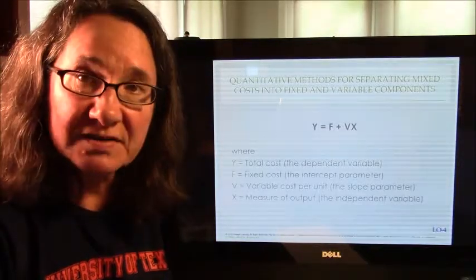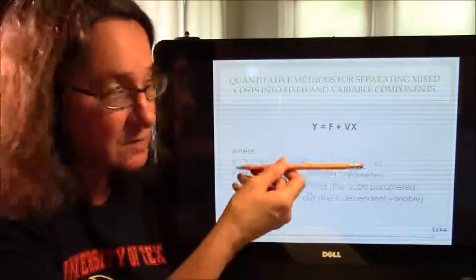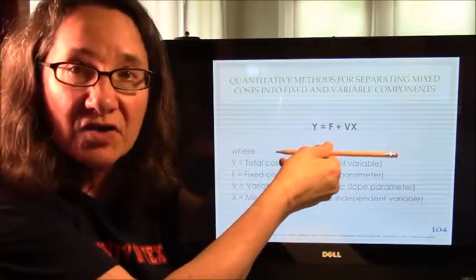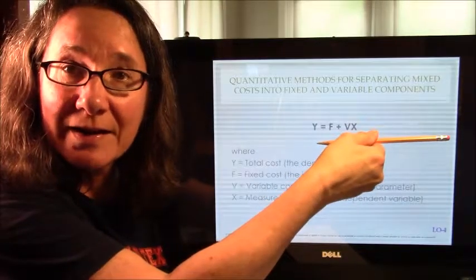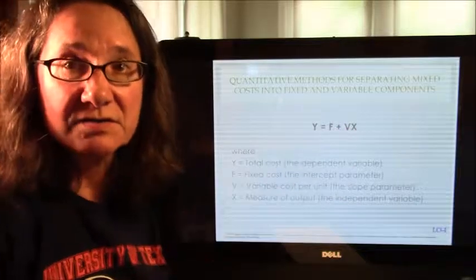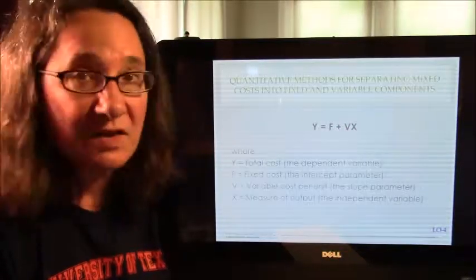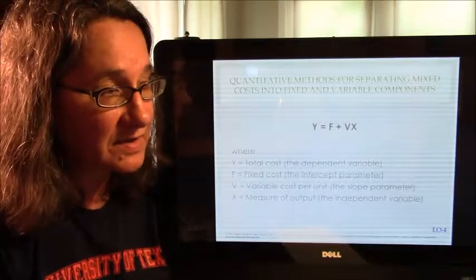F, fixed cost, or the intercept on the Y axis. So, remember that line that goes straight across from the Y axis, no matter how many units we produce on the X axis? That's our intercept. So, when we estimate costs using our data, fixed costs will be our intercept.